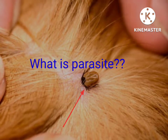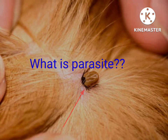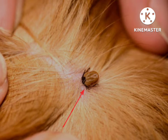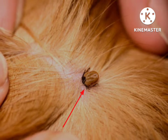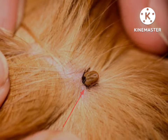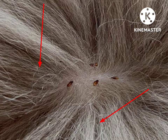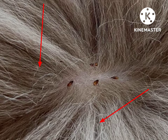So, what is a parasite? A parasite is a living organism that depends on the host for food and survival. How does it benefit the host? The host is also an organism that provides shelter and nutrition to the parasite.